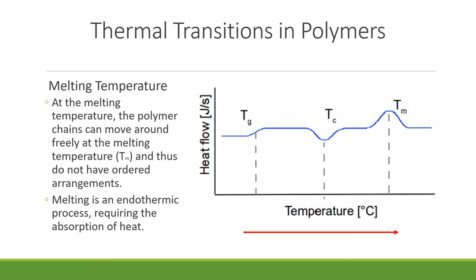Finally, after both the glass transition and the crystallization temperature are reached, the polymer now reaches its melting temperature. At a polymer's melting point, the chains are able to not only move around freely, but they also have no ordered arrangements. Out of the three processes, the melting temperature is completely endothermic.